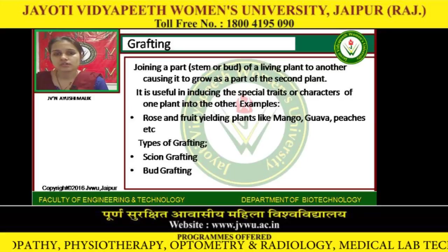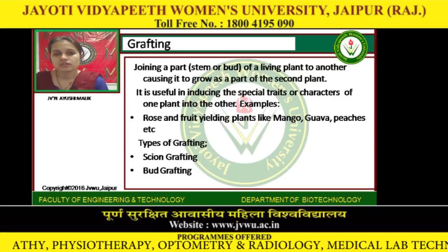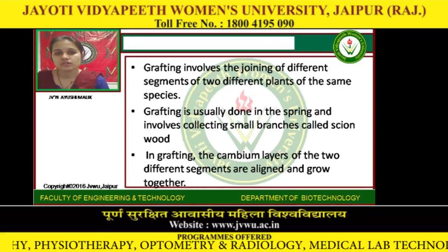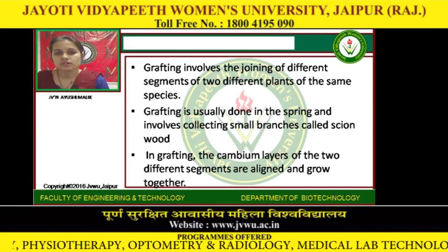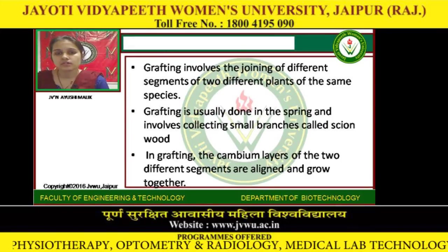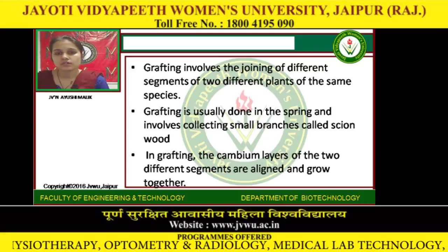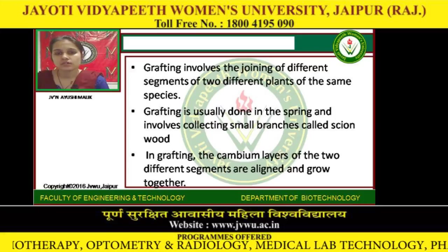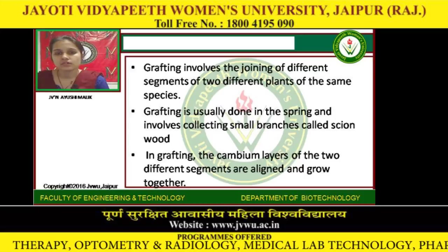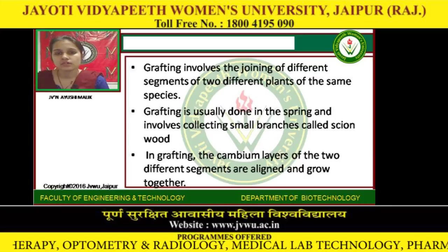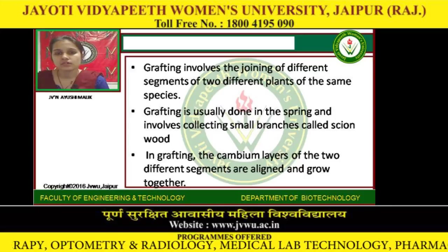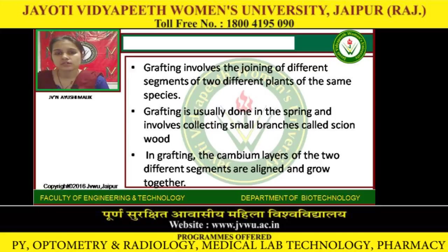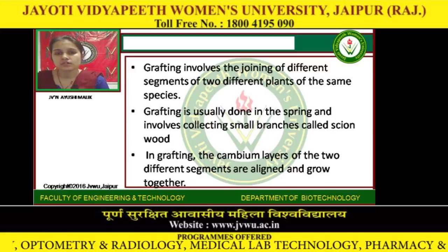Types of grafting include scion grafting and bud grafting. Grafting involves the joining of different segments of two different plants of the same species. It is usually done in the spring and involves collecting a small branch called scion wood. The cambium layers of the two different segments are aligned and grow together.